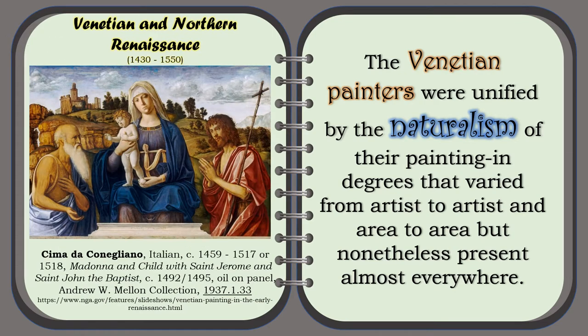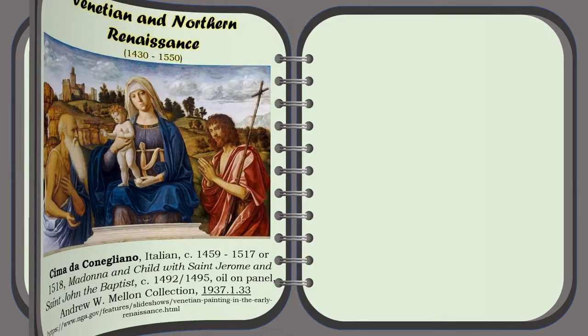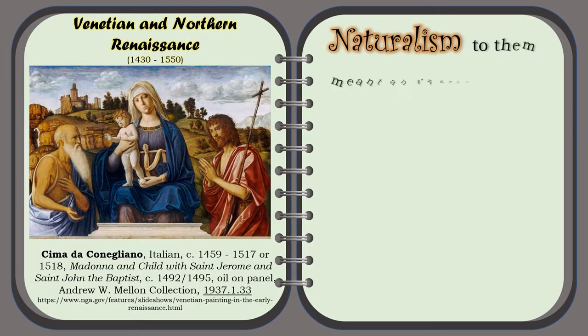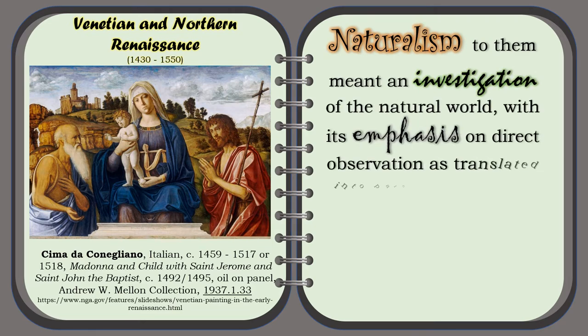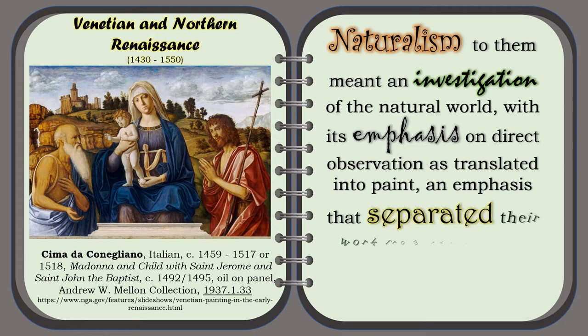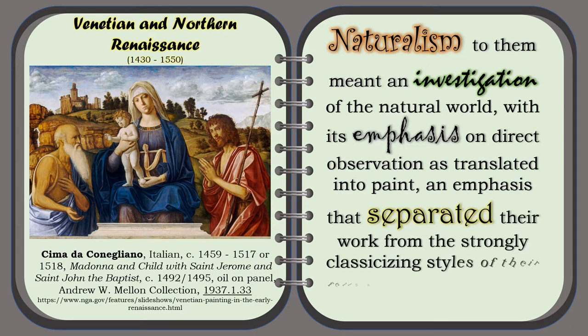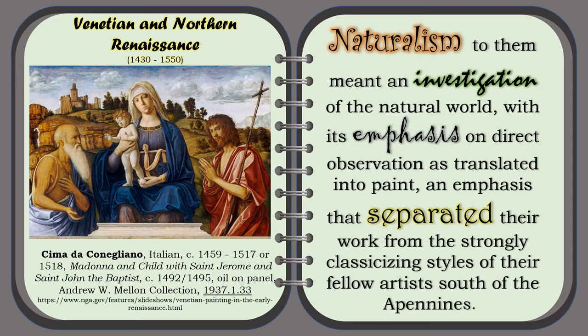Another example: the painting of Cima da Conegliano, Italian — The Madonna and Child with Saint Jerome and Saint John the Baptist. Thus, naturalism to them meant an investigation of the natural world, with its emphasis on direct observation, as translated into paint — an emphasis that separated their work from the strongly classicizing styles of their fellow artists south of the Apennines.